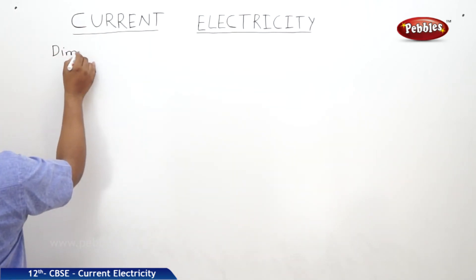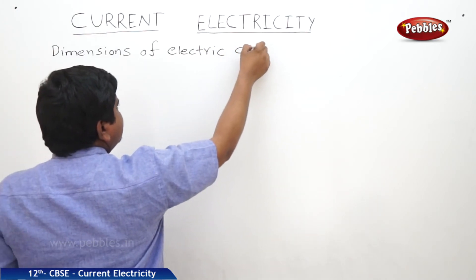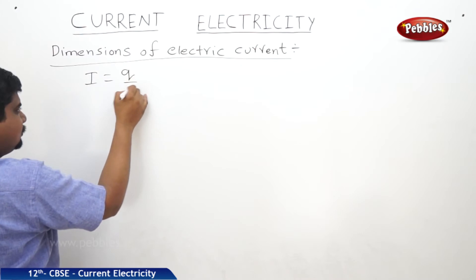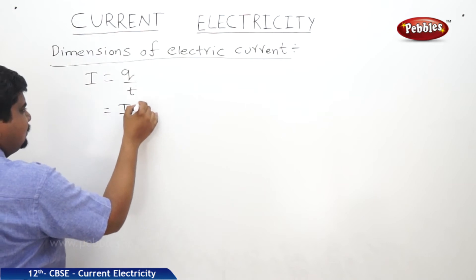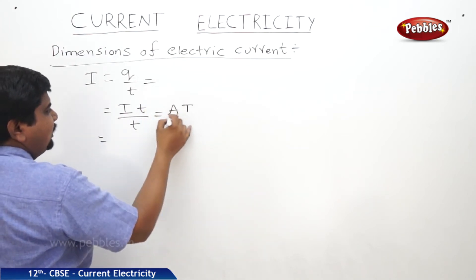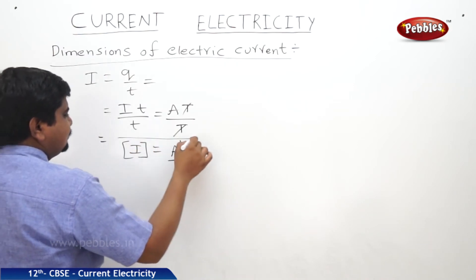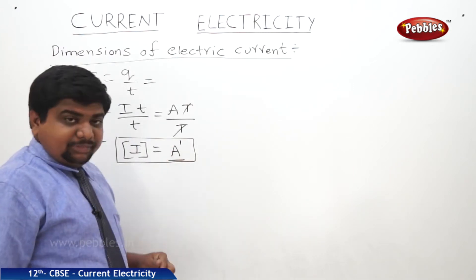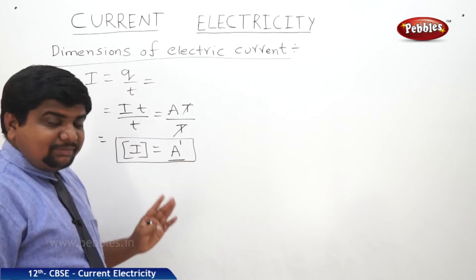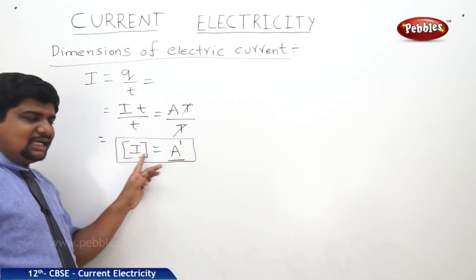Now, the dimensions of electric current. We know I = Q / T. We can write this as ampere × time divided by time, so time and time get cancelled, giving A to the power one. This is the dimensional formula of electric current. A¹ means current is independent of mass and length of the conductor.